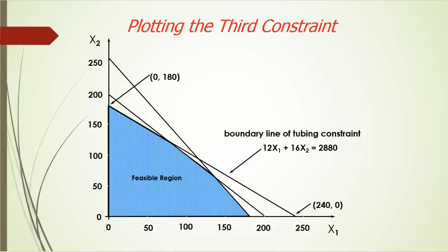Now we've considered all the constraints. Since the feasible region is the set of points satisfying all constraints, we are left with a highlighted pentagon. This is indeed our feasible region, which contains all the feasible solutions. Anything outside will violate at least one of the constraints. The optimal solution must be feasible.